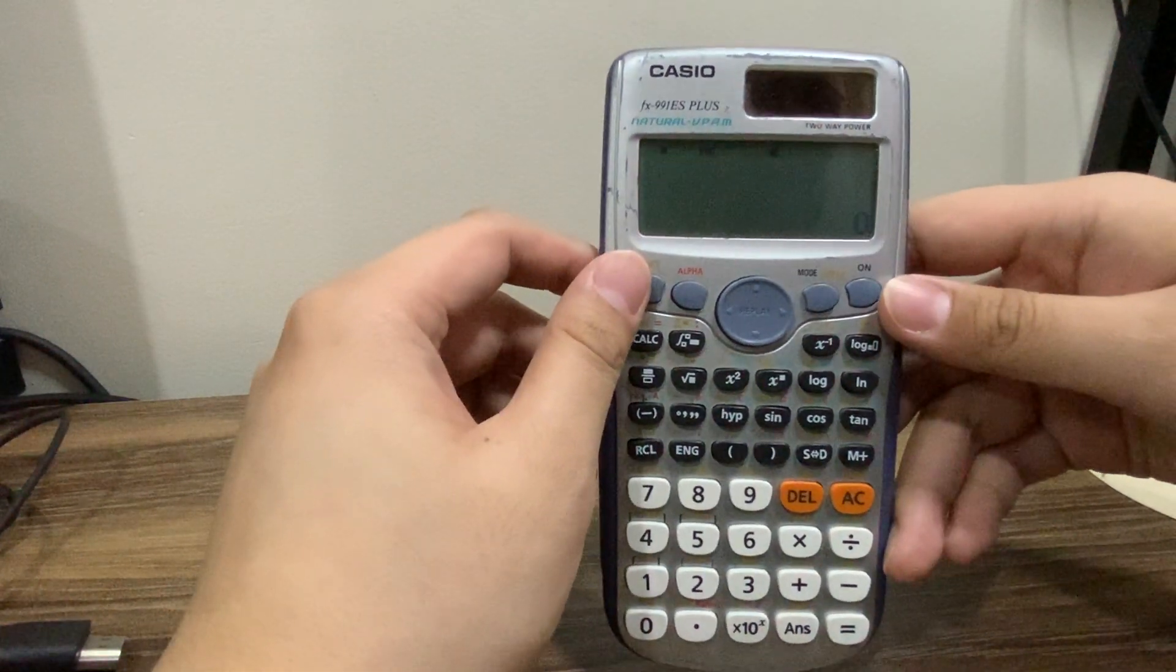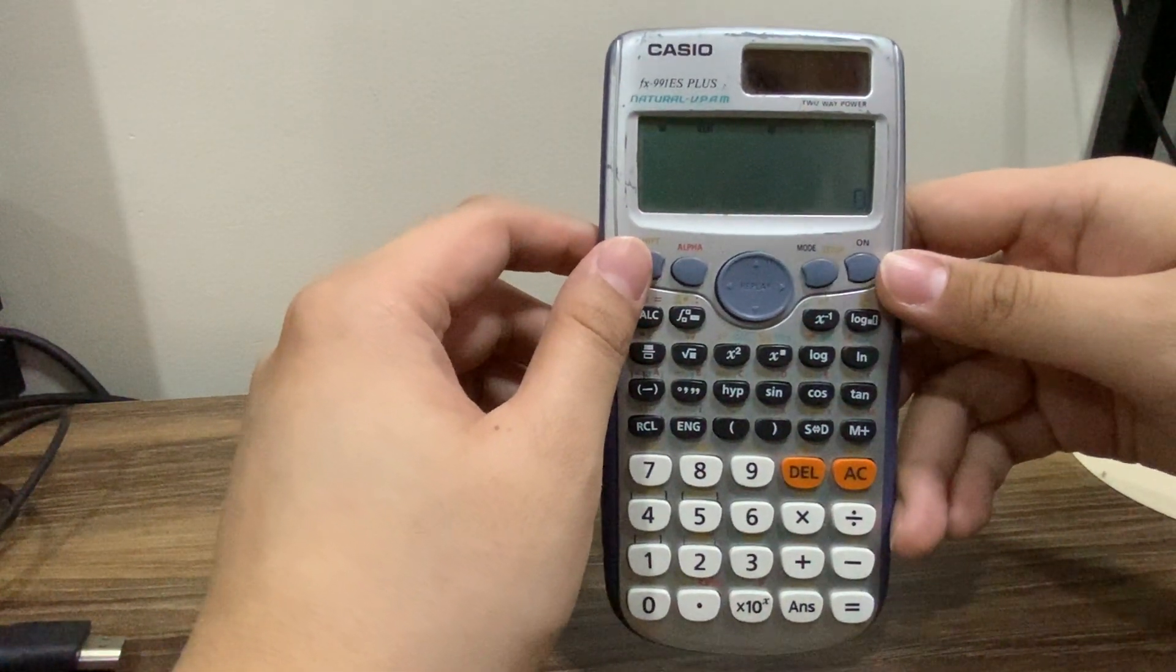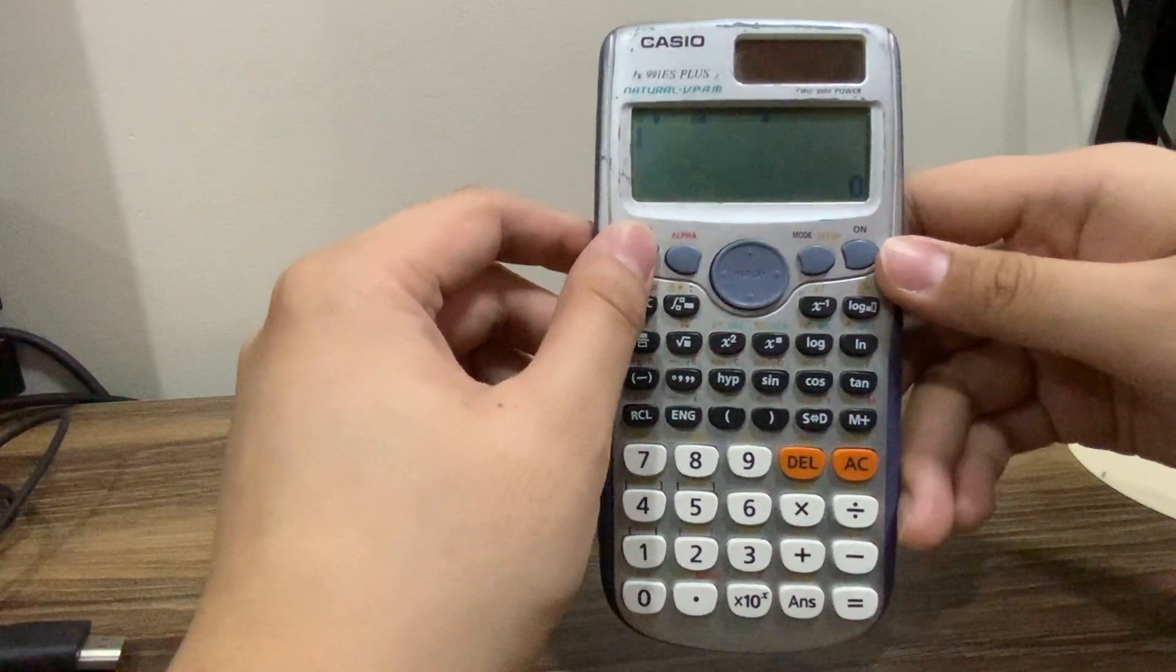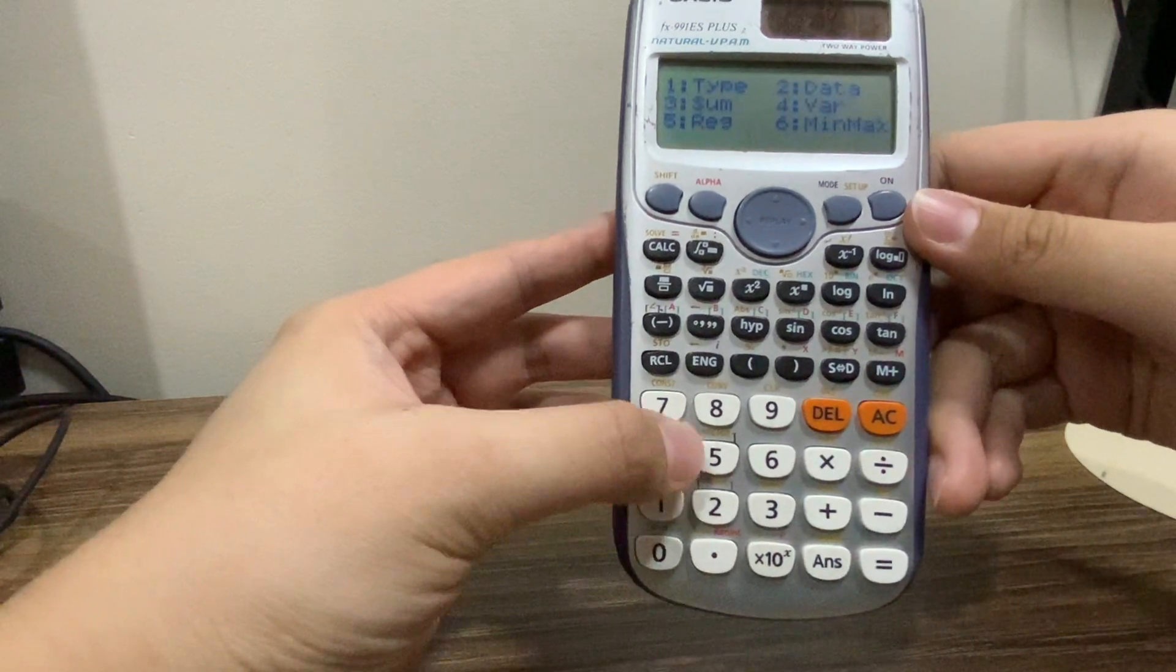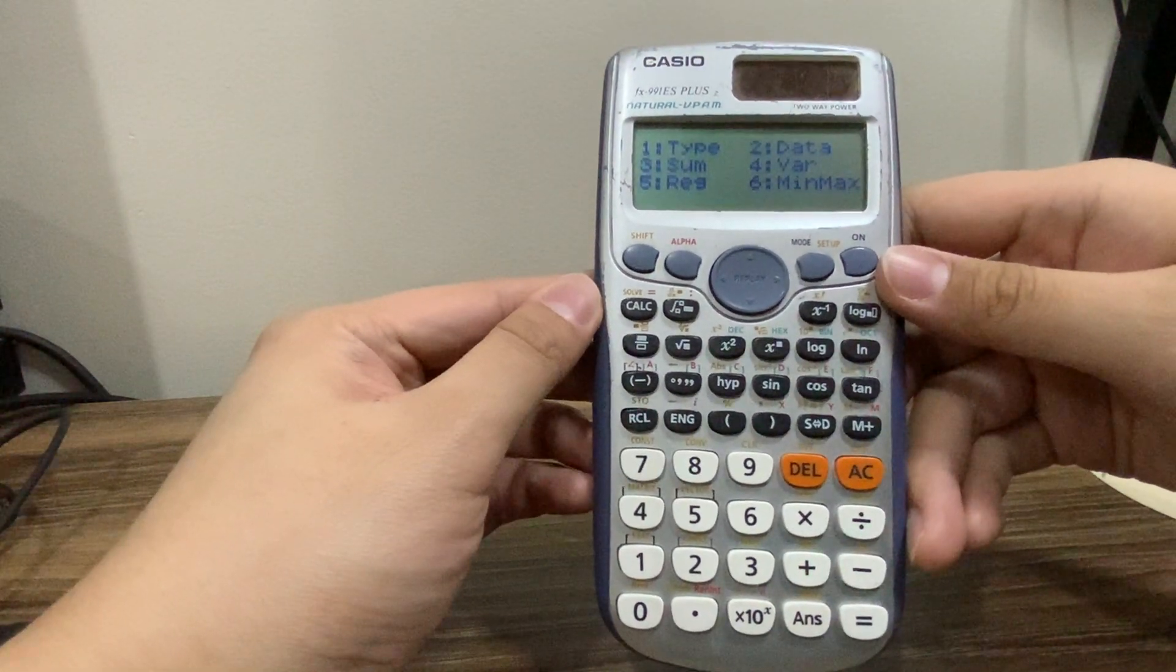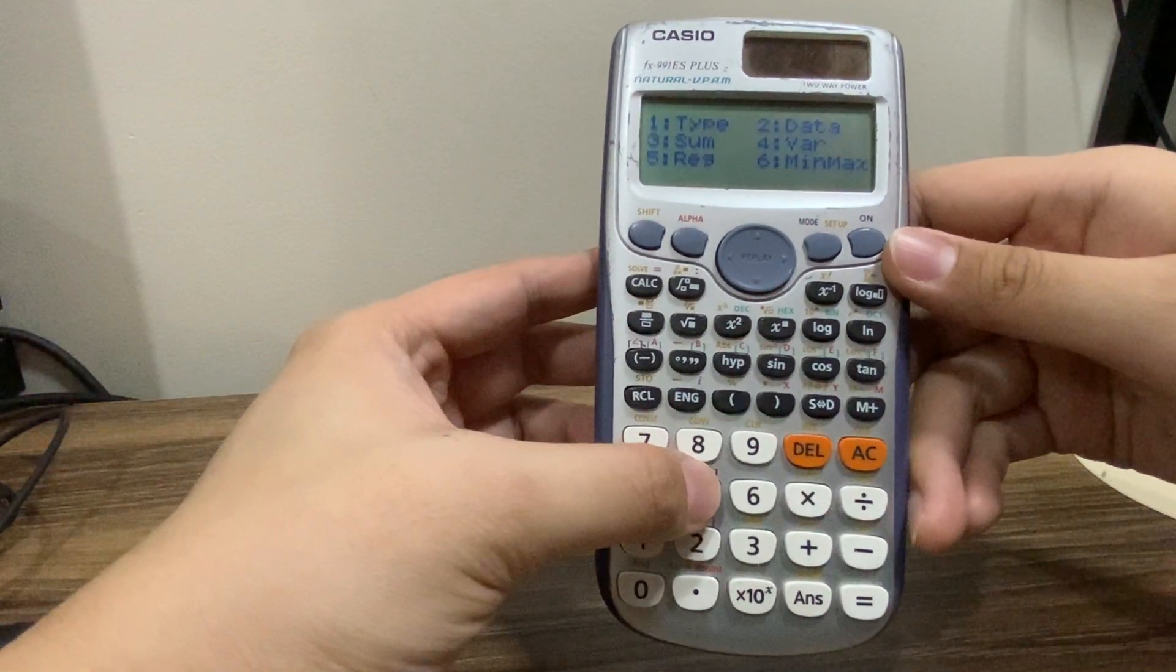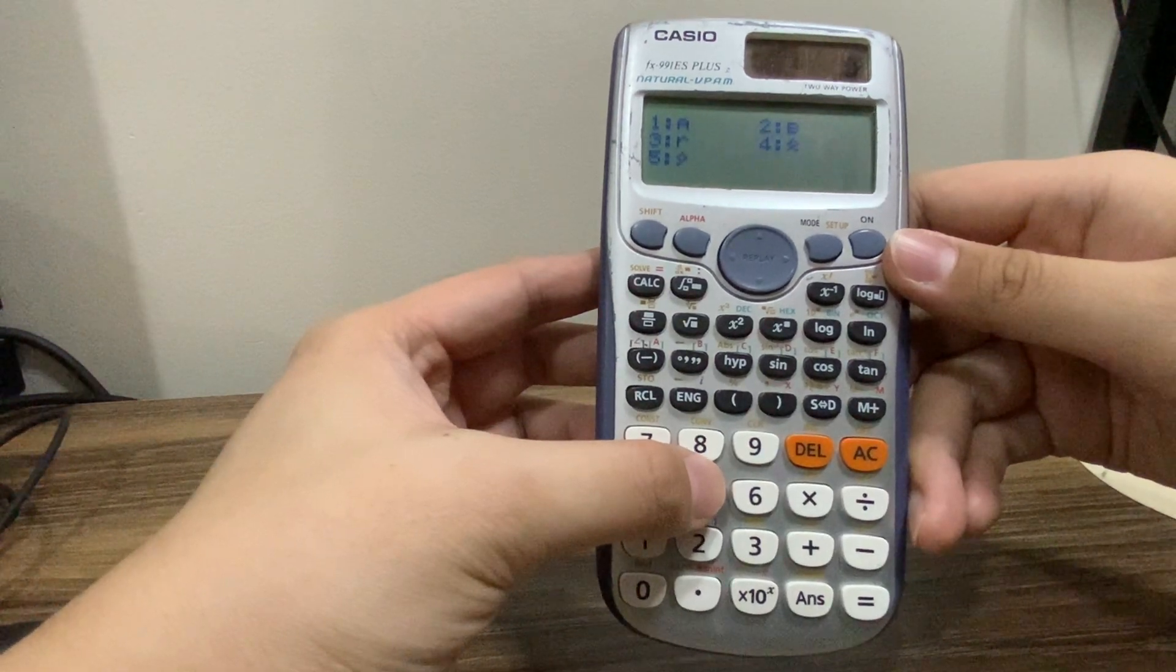And then, to go to the regression mode, we need to go to shift stat. So shift, and then click stat 1. Okay, shift stat 1. That will appear. So go to regression, to 5.